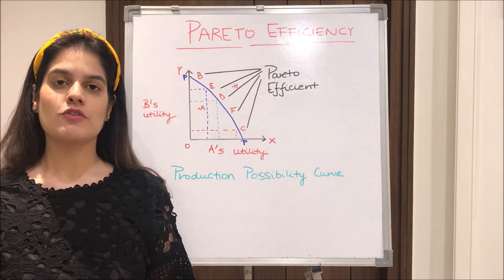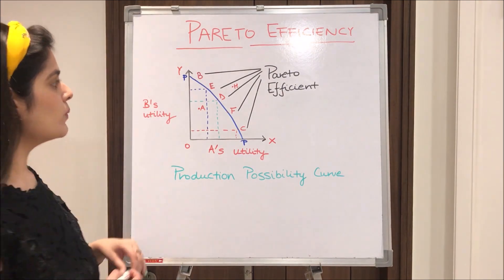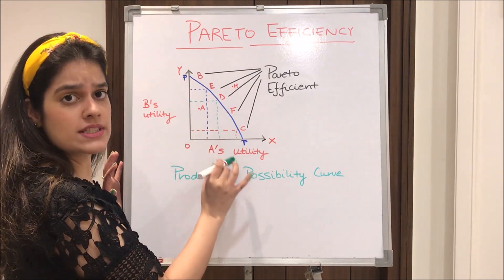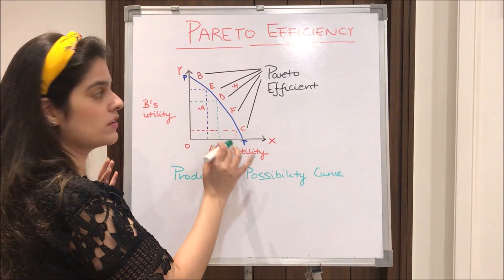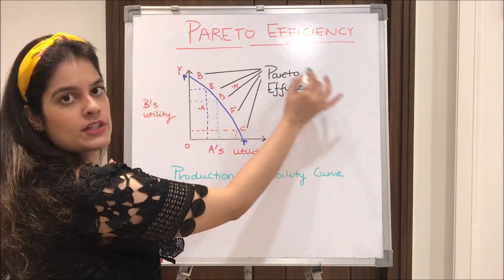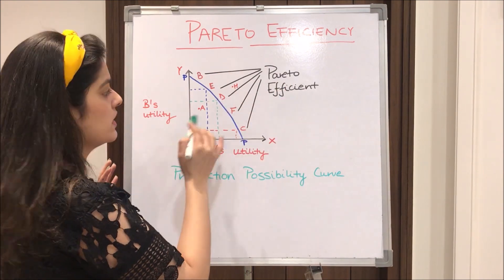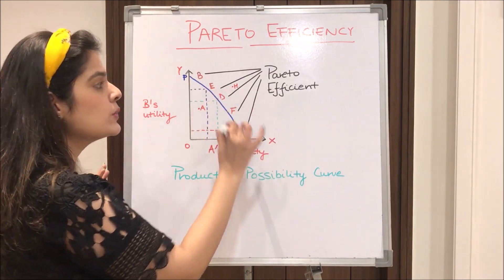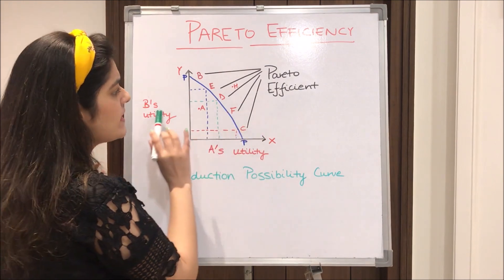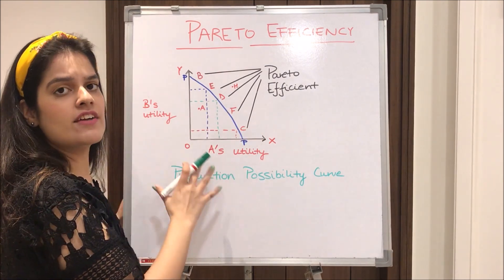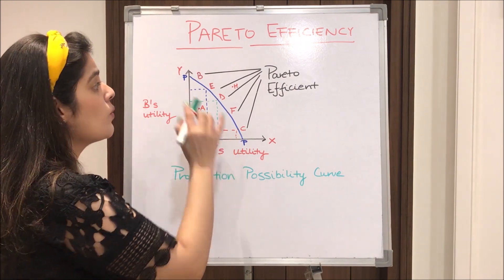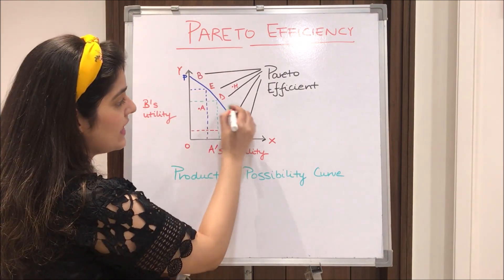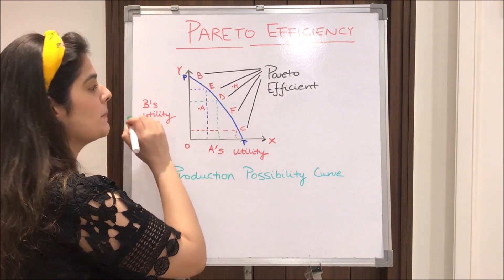I'll explain Pareto efficiency with the help of a production possibility curve. We have two consumers A and B and our production possibility curve PP. All points lying on the PP curve — B, E, D, F, and C — are Pareto efficient. Any point inside the curve like A, or outside like H, are not Pareto efficient. However, utility derived at each point may vary: at point D both A and B derive equal utility of 50-50, while at E or B, consumer B derives more utility, and at F or C, consumer A derives more.